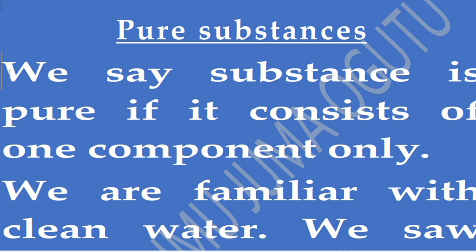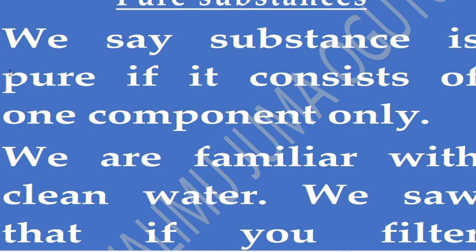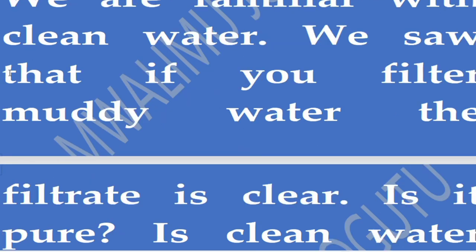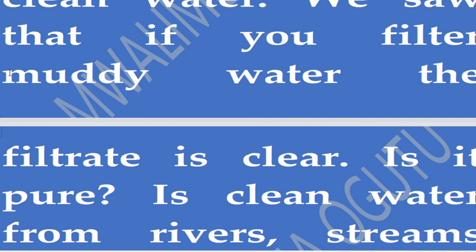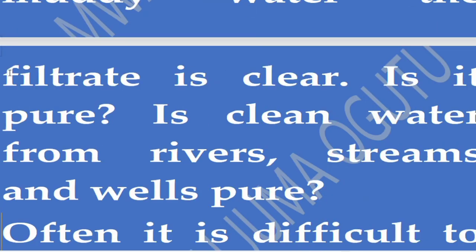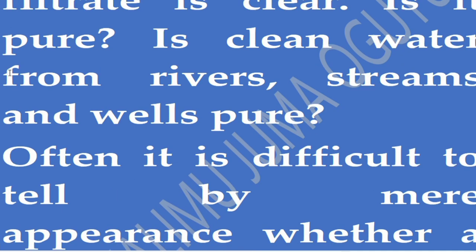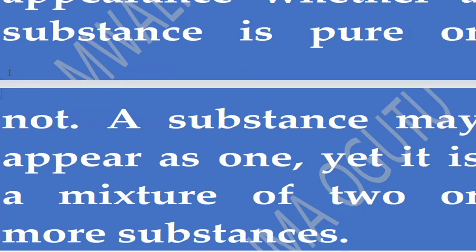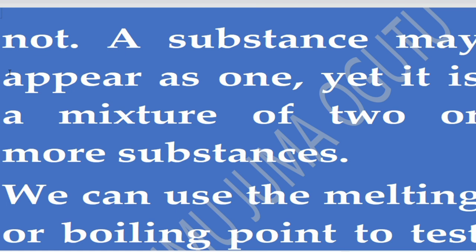A substance is pure if it only consists of one component. We are familiar with clean water. We had an experiment where we saw that if you filter muddy water, the filtrate is clear. The big question is: is this clear water pure? Often it is difficult to tell by appearance whether a substance is pure or not. A substance may appear as one yet it is a mixture of two or more substances. We have a number of methods we can use to test the purity of a substance.